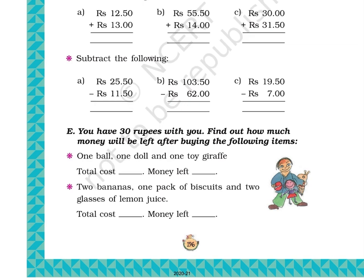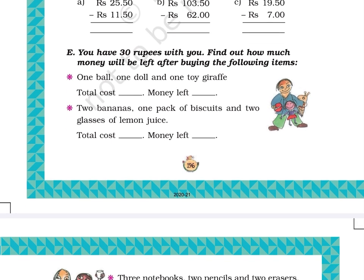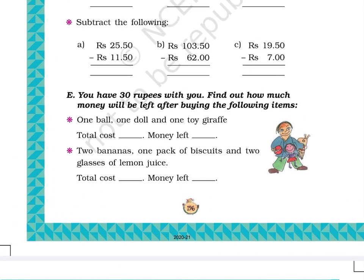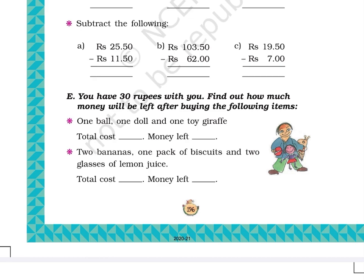Question E: You have 30 rupees with you. Find out how much money will be left after buying the following items. Part A: One ball, one doll, and one toy giraffe. Total cost: ___. Money left: ___. Part B: Two bananas, one pack of biscuits, and two glasses of lemon juice. Total cost: ___. Money left: ___. On the right side of these questions, there is a picture of a boy holding a ball, a doll, and a toy giraffe.